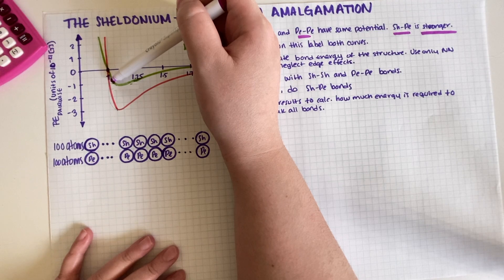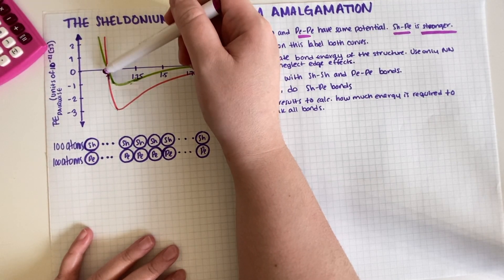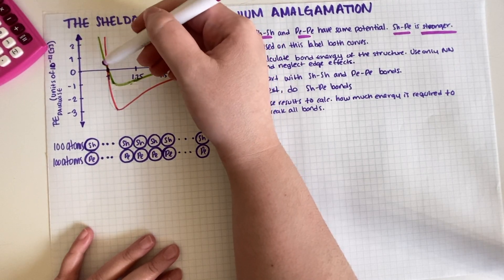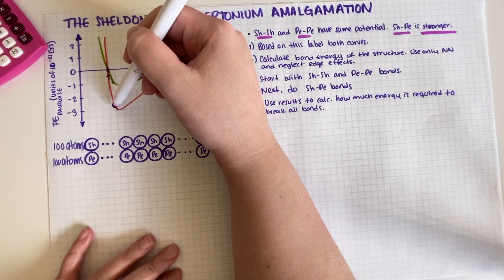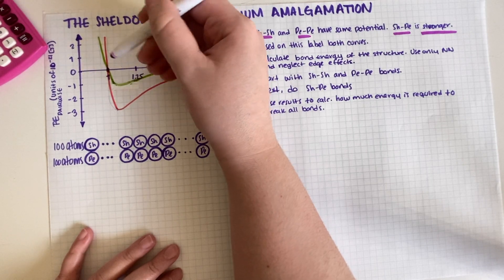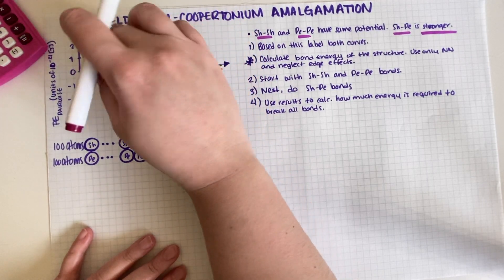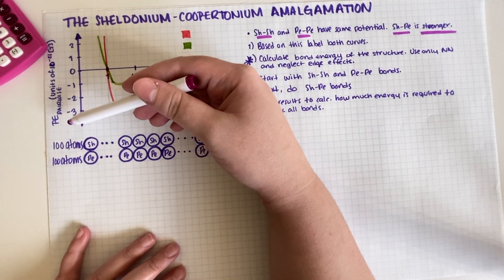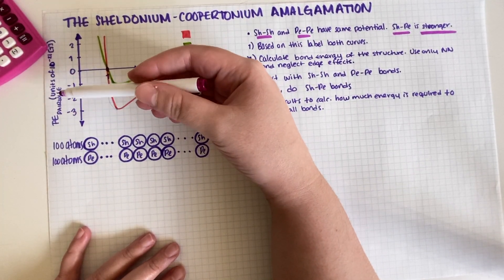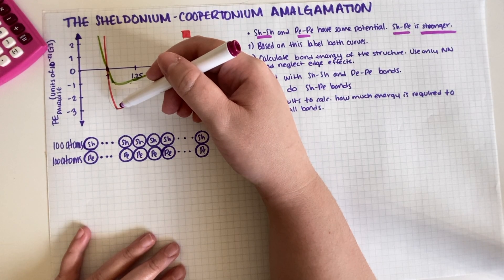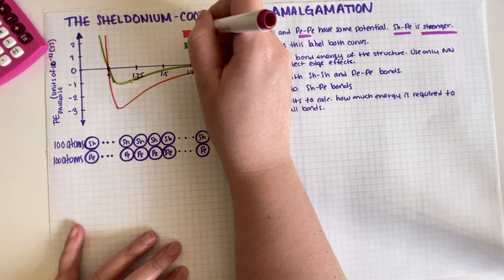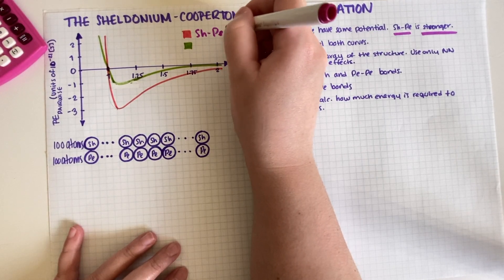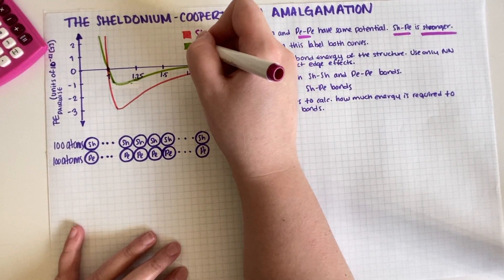Both of them have the same radius, which means that if you combine one of each they have the same diameter as well. However, this pink graph is way stronger because it goes down farther than the other one. So because this one goes farther down, that means the pair has more potential energy, and that would mean that this one, the one that goes farther down, is a combination of Sheldonium and Coopertonium, and then this one is either Sh-Sh or Pe-Pe.